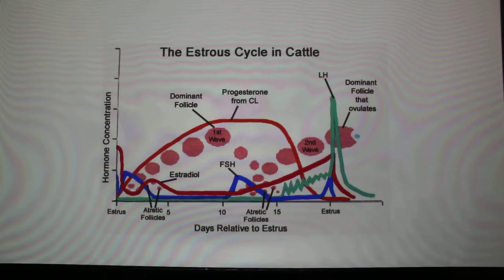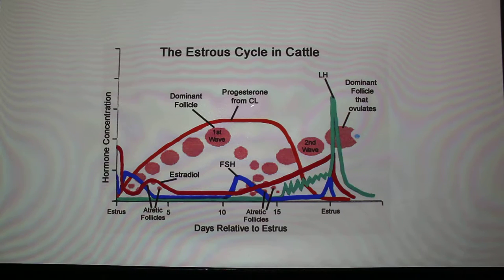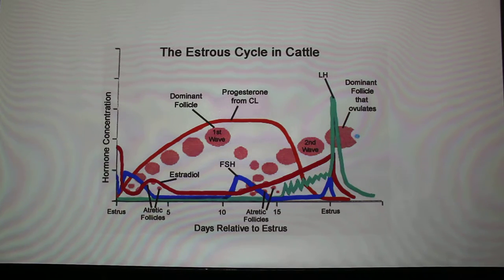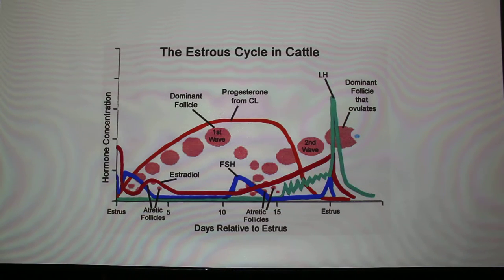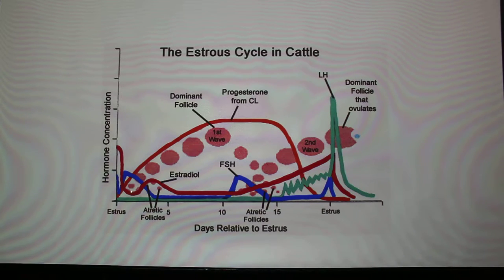So you could go 21 days — that's about 15 or 16 estrous cycles if they're not bred. The first thing you should know is when the animal ovulates it forms a structure on the ovary called the CL, the corpus luteum, which makes progesterone. Without progesterone, pregnancy is not possible — if you inhibited that progesterone from being made you'd have a spontaneous abortion. There's a famous progesterone antagonist made in France — RU-486.